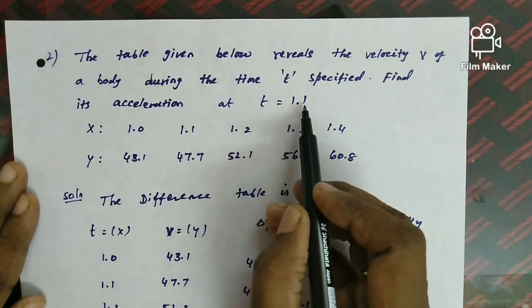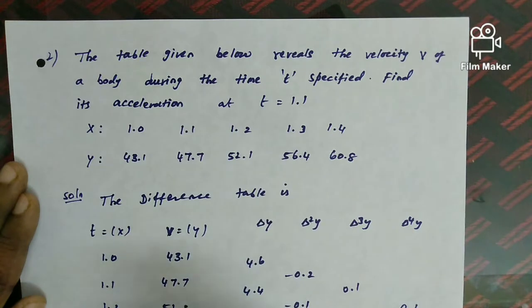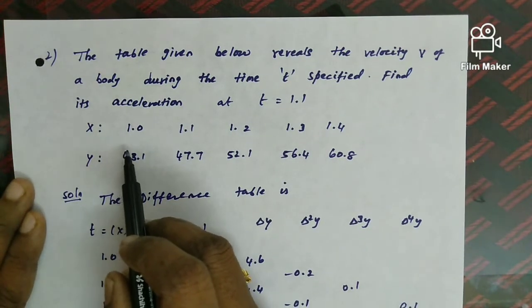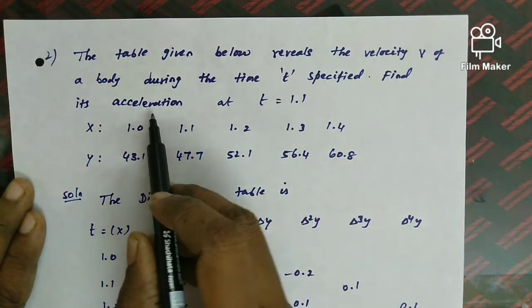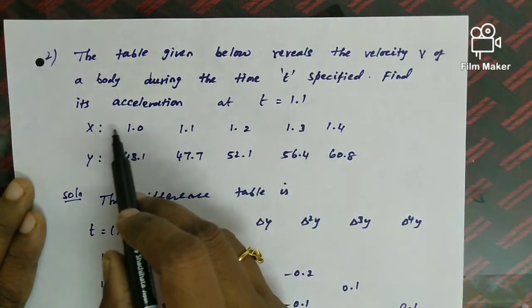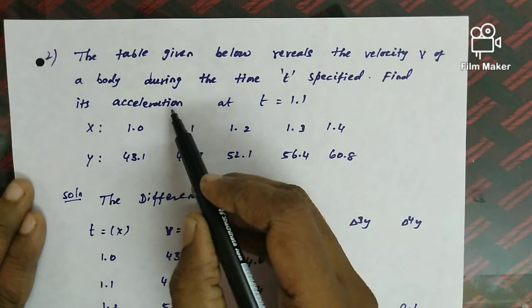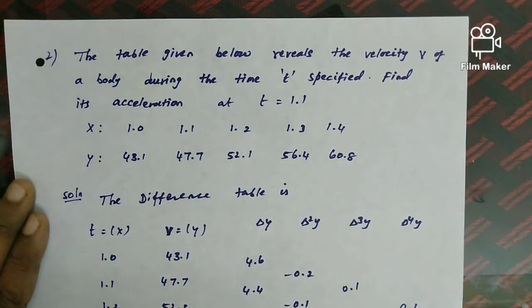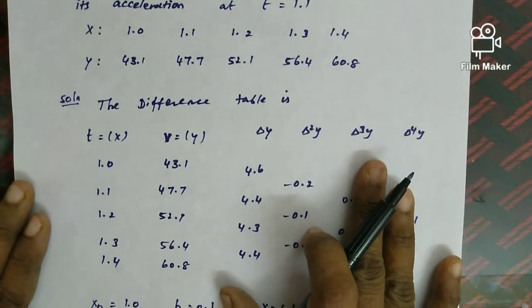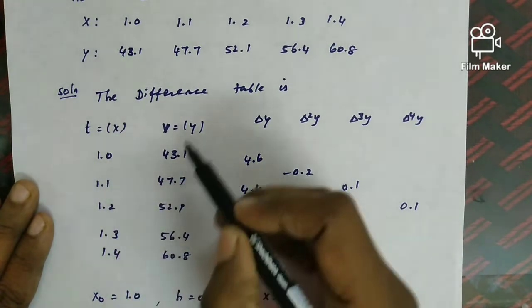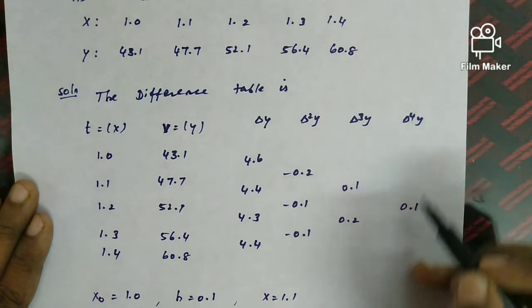Second question: the table given below reveals the velocity v of a body during time t. Find its acceleration at t = 1.1. The x data is time t and y data is velocity v. The t values are 1.0, 1.1, 1.2, etc. Since t = 1.1 is the beginning value of the data, we can use the forward difference formula. We build the difference table from the given t and v data, obtaining Δ up to Δ⁴.